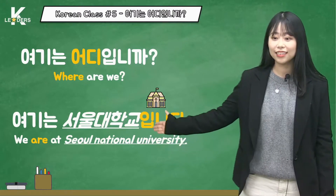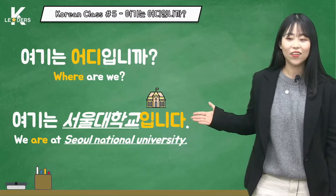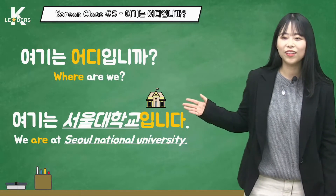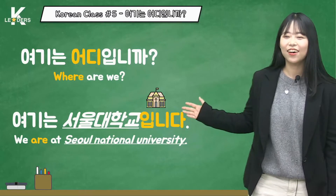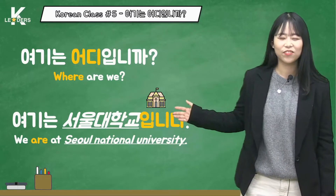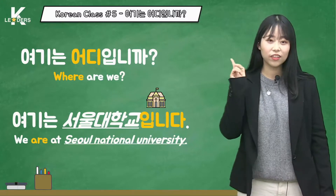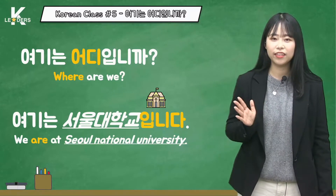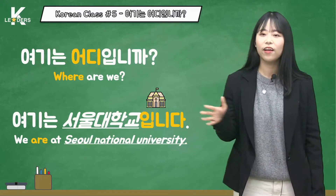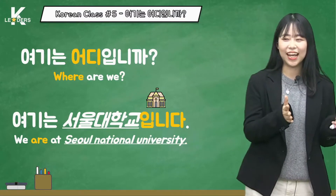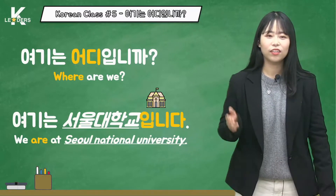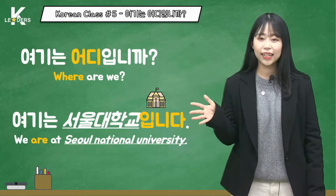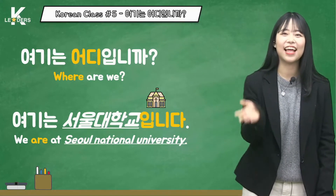The next sentence is 여기는 서울대학교입니다. 서울대학교 means Seoul National University. I will tell you about the sentence structure here. In English, sentences are written in the order of subject, verb, object. But in Korean, remember that the order is subject, object, and verb.